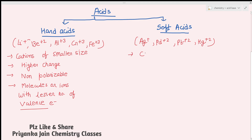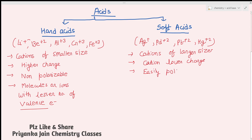Soft acids are cations of larger size from heavier elements with lower charge. They should be easily polarizable and are ions or molecules with a large number of valence electrons.